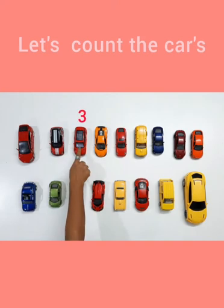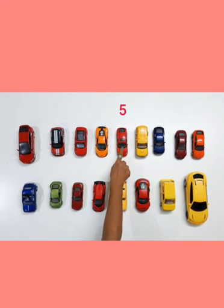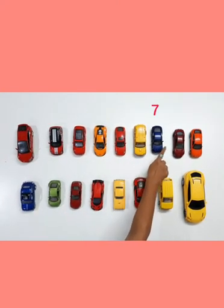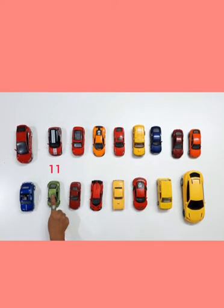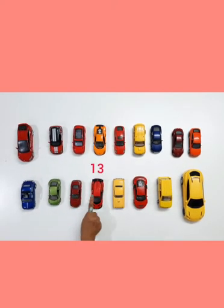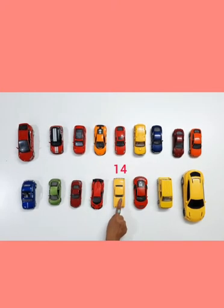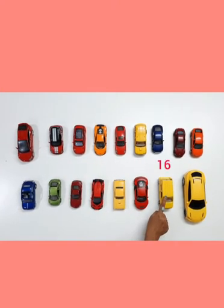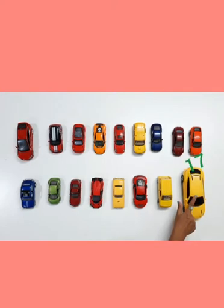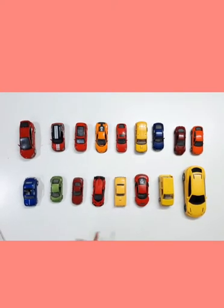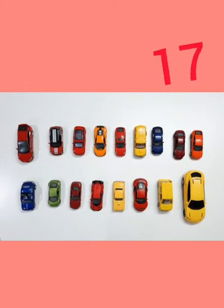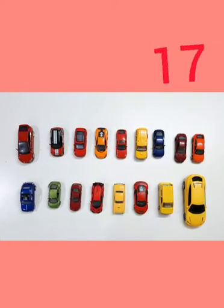One, two, three, four, five, six, seven, eight, nine, one zero ten, one one eleven, one two twelve, one three thirteen, one four fourteen, one five fifteen, one six sixteen, and one seven seventeen. So how many cars have we counted? Yes, seventeen. One seven seventeen.